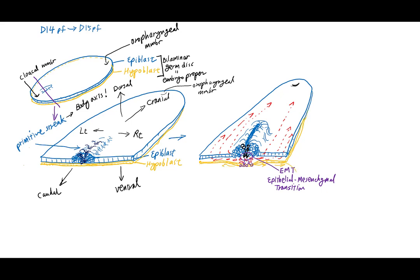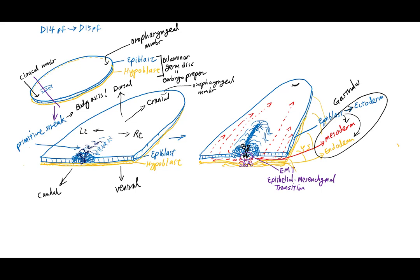Much like a conveyor belt, the hypoblast cells get pushed out towards the yolk sac. Ultimately, the epiblast cells have created three different germ cell layers: the epiblast cells remaining on the dorsalmost aspect become the ectodermal layer; the new mesenchymal layer formed through EMT becomes the mesodermal layer; and the new layer of cells that replaces the hypoblast becomes the endodermal layer. This process of forming the three germ cell layers from the epiblast is called gastrulation, beginning between day 14 and 15 — the start of week three.